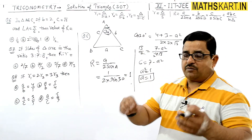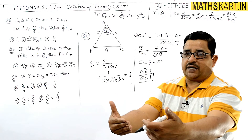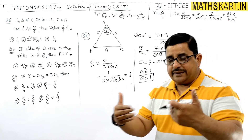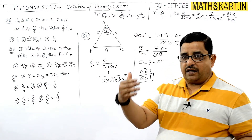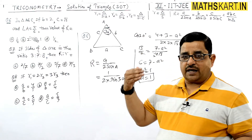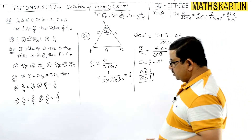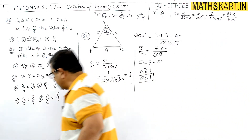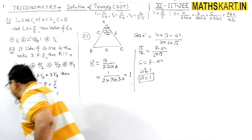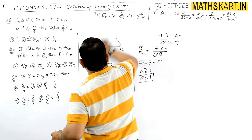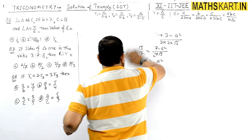यहाँ बहुत ही simple है — खाली formula अच्छी तरह से पता होना चाहिए। Formula सामने रखके देख सकते हैं कि किस method से निकालना है। इसके बाद आता है question number 7।